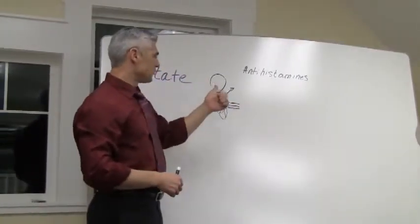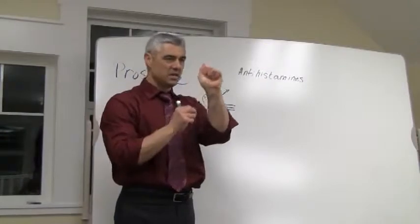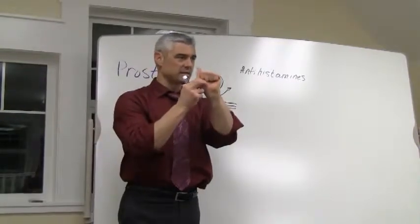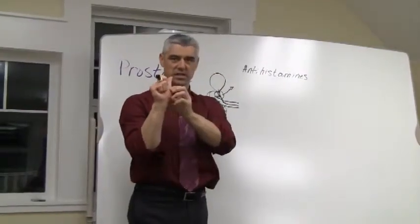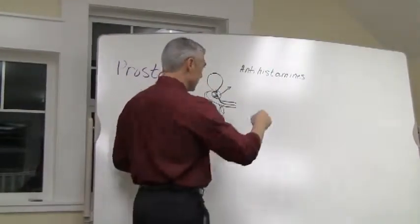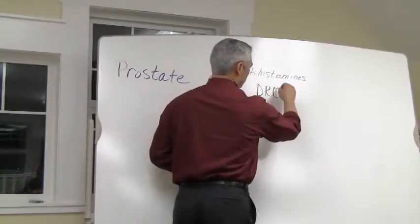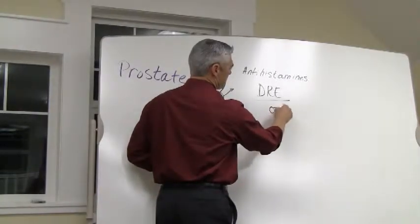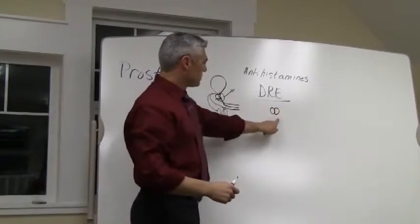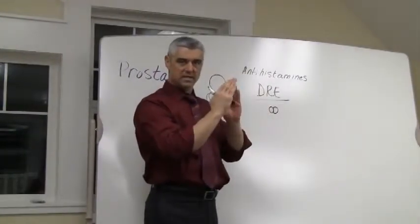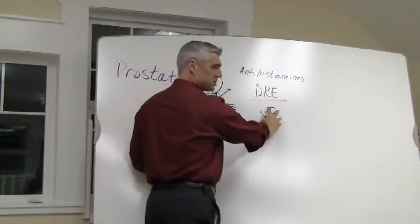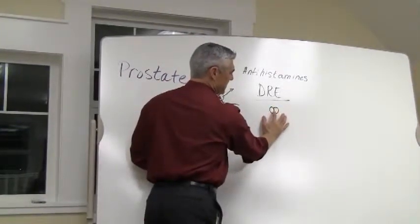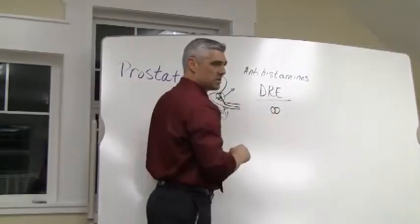The prostate should be the size of a walnut. It should have the consistency or feeling of this area, the thenar eminence of your palm. So when you hold your hand in a fist like this and you press on that area of the hand, that's what the prostate should actually feel like. So when you have what's called the DRE or digital rectal exam, what you're actually feeling for is the prostate to be the size of a walnut and basically have the shape of a peach. When you feel there should be a sulcus down the center of that back side of the prostate and it should feel even on both sides. Almost like a little peach or a small, again, the size of the walnut, but have that type of a little dent or demarcation.